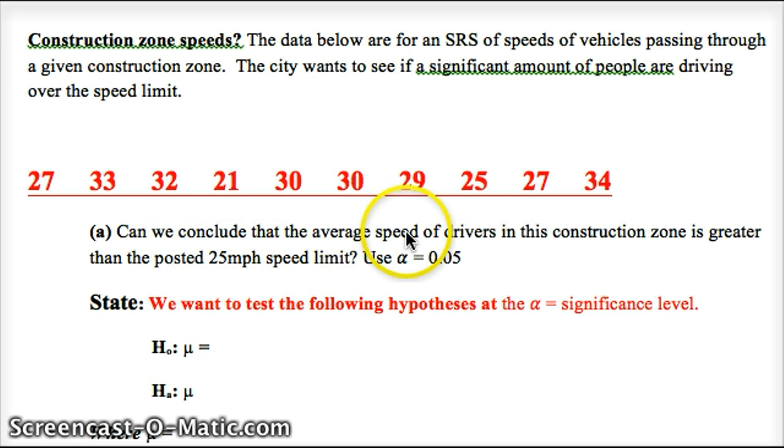Note that 25 would be the speed limit. Their question is, can we conclude that the average speed of drivers in this construction zone is greater than the posted 25 miles per hour speed limit? We're using alpha equals 0.05, meaning that if there's less than a 5% chance that we get this sample, given that the true value is 25 miles per hour true, then we can reject the null hypothesis.